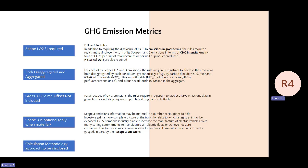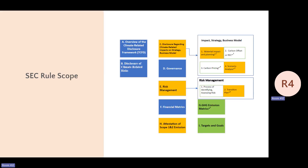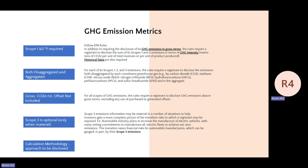Going deeper on the GHG emission metrics: scope one and two are very similar to what EPA is already requiring you to report — GHG emissions in gross terms. You also need to calculate the intensity by revenue or by product. Historical data are required, year to year.